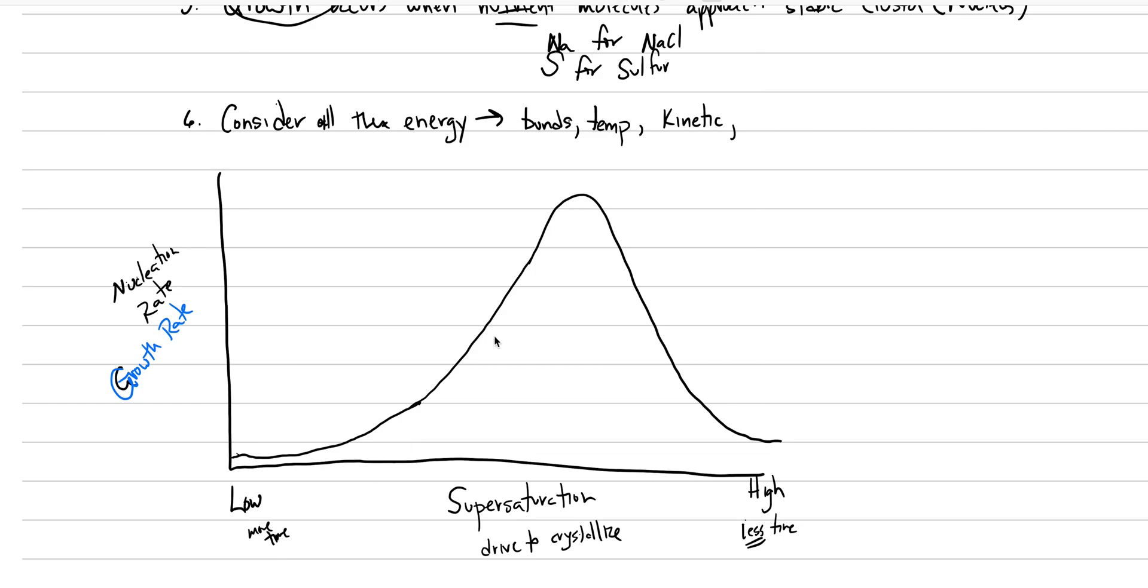Now, growth has a very similar behavior, but the curve looks somewhat different. Growth is favored at lower degrees of supersaturation, and then as you go to higher degrees of supersaturation, you actually don't have time. So this is our growth curve.